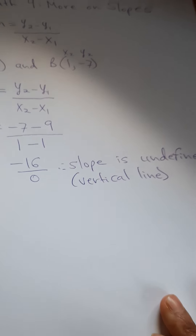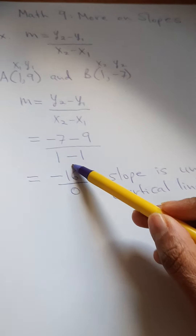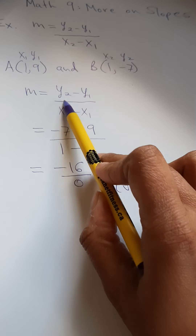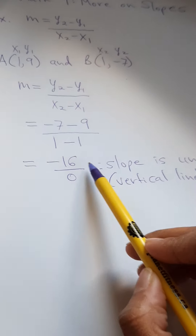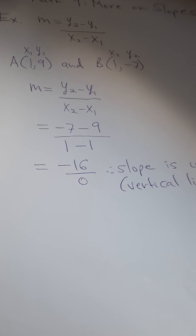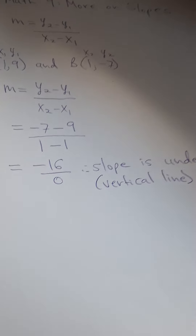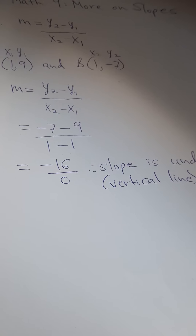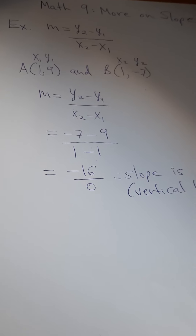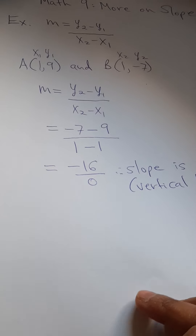However, if the top part ends up being 0 — if I did y2 minus y1 and the numerator was equal to 0 — that would mean I have a horizontal line and the slope would actually equal 0. Let's try applying the slope formula one more time.